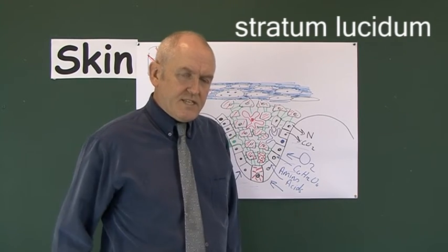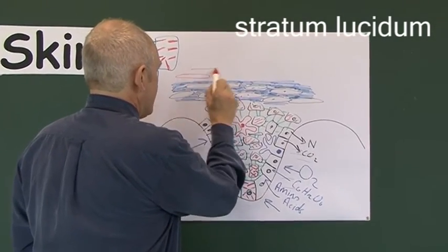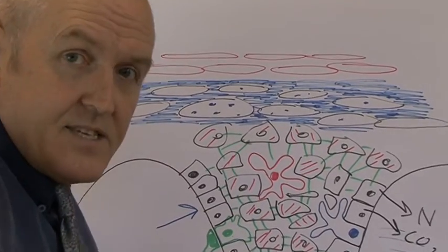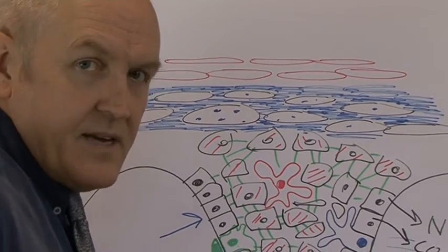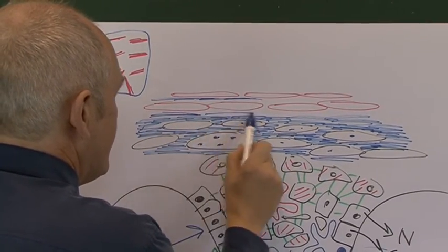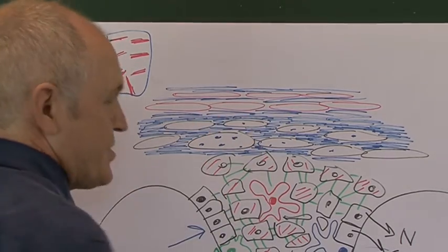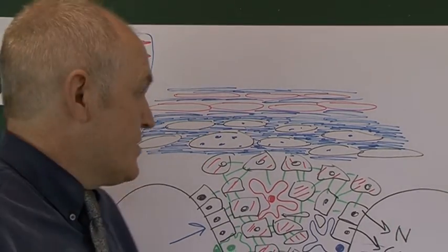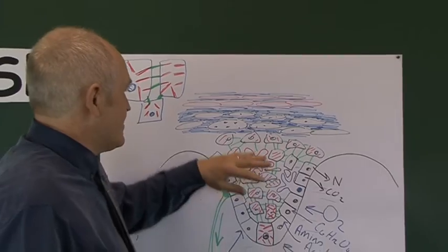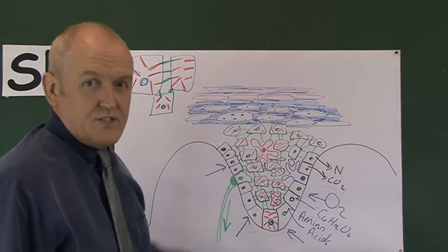The stratum lucidium contains flattened dead cells, still held together by the lipid extracellular matrix, making them waterproof, but forming a transparent or lucid layer. So in thick skin we have: stratum basale, stratum spinosum, stratum granulosum with the granules, and then this thin layer of stratum lucidium.